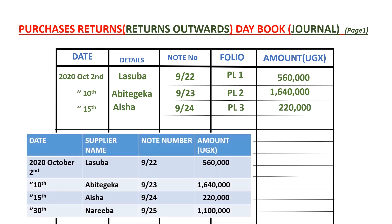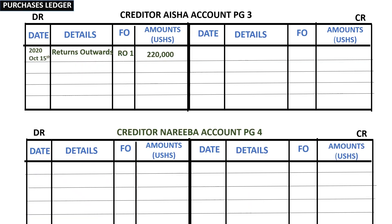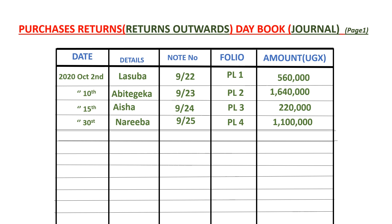The final transaction: supplier Nareba — we returned goods to him, debit note number 9/25, amount 1,100,000. We go to the purchases ledger, creditor Nareba's account, and debit it with 1,100,000. The other item affected is returns outwards in the returns outwards day book on page one. We reference Nareba's account in the folio column as PL4 — purchases ledger page four.